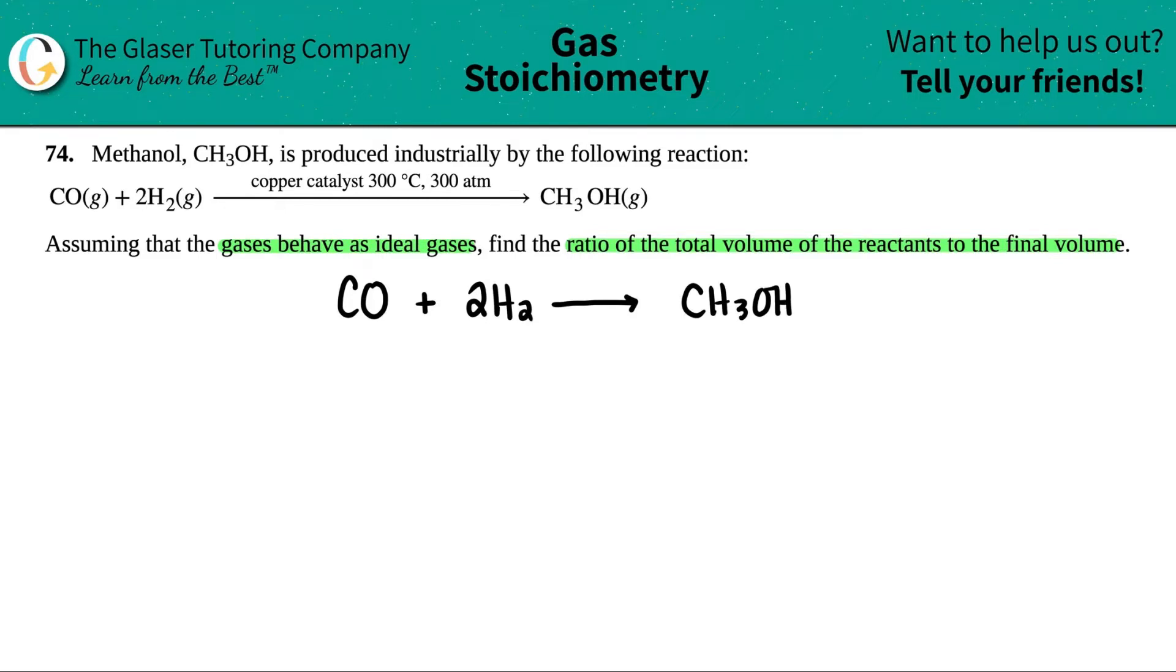Okay. So now they're telling us that they're ideal gases, which means that they follow PV equals NRT. All we have to do is basically find the ratio of the total volume of the reactants to the final volume.